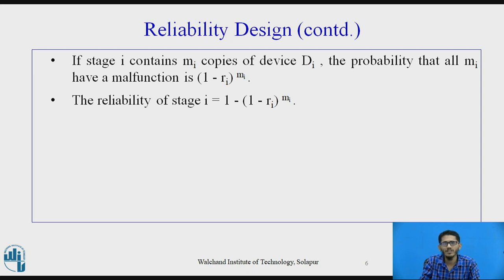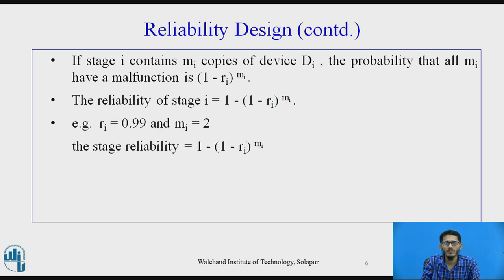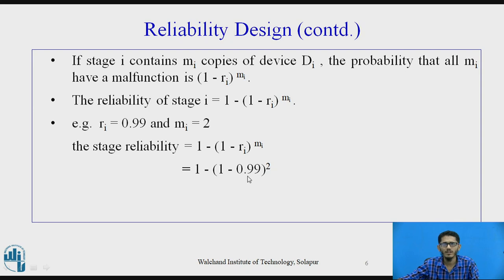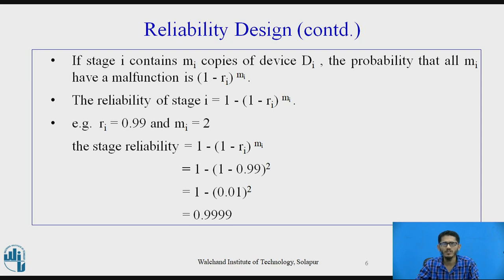Therefore, the reliability of stage i will be equal to 1 minus that probability of malfunctioning, that is 1 minus (1 − ri) raised to mi. For example, if ri equals 0.99 and mi equals 2, meaning 2 copies, the stage reliability equals 1 minus (1 − 0.99) squared, which equals 1 minus 0.01 squared, giving 0.9999. This is the stage reliability.